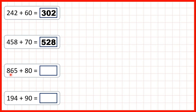Now 865 plus 80. Now 6 plus 8 is 14, but if we have 14 tens, we'll make an extra 100. So we look at our hundreds and tens digits together. 86 plus 8 is 94. So our answer is 945 because our ones digit stays the same.